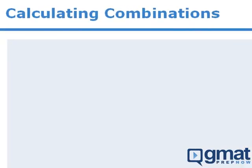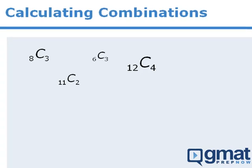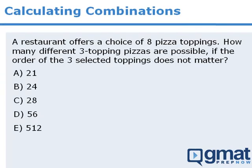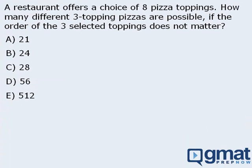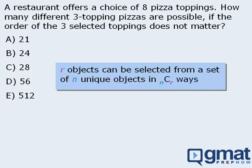In this lesson, you will learn a fast way to calculate combinations like these in your head. To set things up, consider this question: we want to find the number of ways to select three pizza toppings from eight pizza toppings. In an earlier lesson, we learned that we can use combinations in these instances. Since we have eight items altogether and we want to select three of them, we can accomplish this in eight choose three ways.